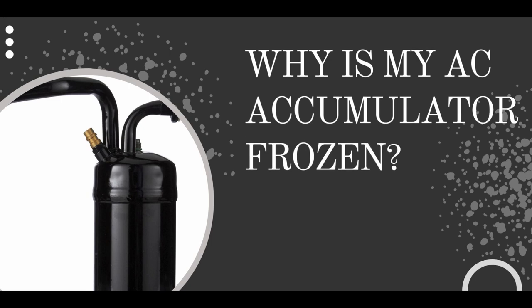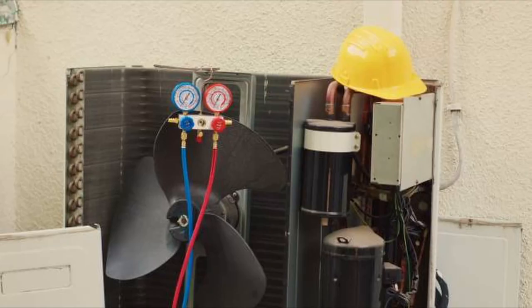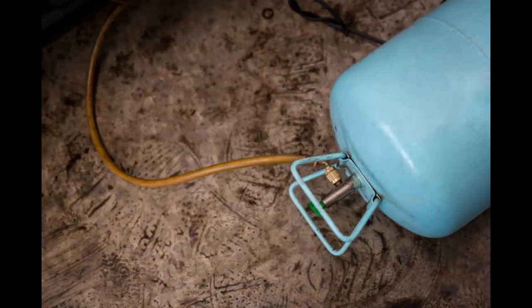Why is my AC accumulator frozen? The accumulator in your AC unit is responsible for storing refrigerant. It is usually located near the compressor and it looks like a small cylindrical tank. The refrigerant is used to cool the air as it passes through the evaporator coils.